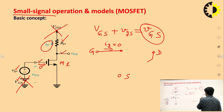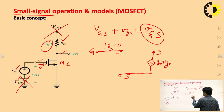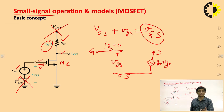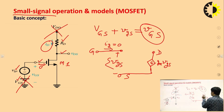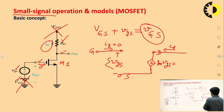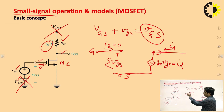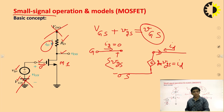Between drain and source there is a dependent source, and this dependent source equals gm × Vgs, where Vgs is the voltage between the gate terminal and source terminal. Since the MOSFET is a voltage-controlled current source, the input voltage Vgs controls the output drain current ID, so ID = gm × Vgs, where gm is the transconductance. This is the small signal model of this particular circuit. The input impedance of the MOSFET is infinite, which is why it is an open circuit between gate and source.